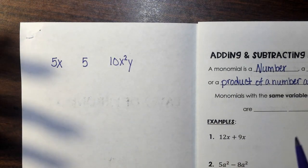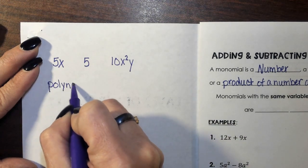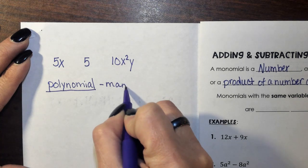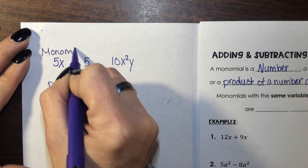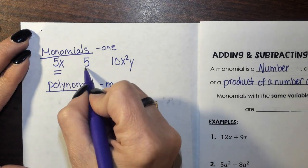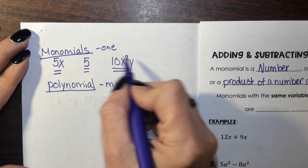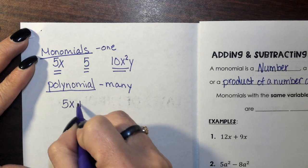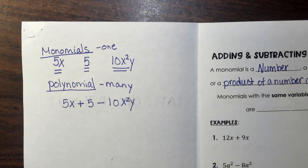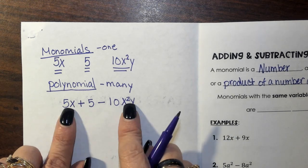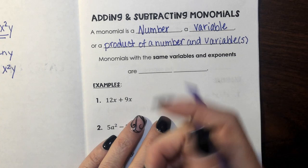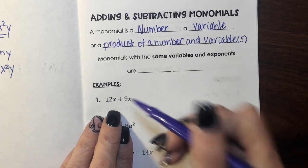What's more than a monomial? Well, if you had something called a polynomial — hopefully your biology is coming into play here — poly means many. So these are monomials: mono means one, one single term. 5x is a monomial, 5 is a monomial, 10x squared y is a monomial. But when I connect those with an operation, I have suddenly created a polynomial — many terms put together in one equation. Monomials are individuals; polynomials are when you have more than one.